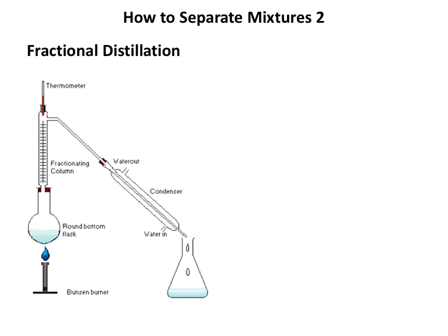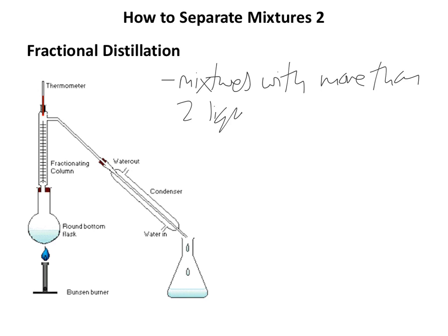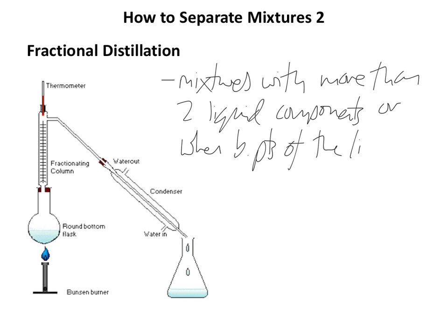It does look a little bit like distillation, unsurprisingly. But there's a key difference. We have a heat source down here, which is the same. We have a condenser here, with the water coming in at the bottom and going out at the top. And we have the distillate dripping off here. The key difference is this piece of kit — a fractionating column. We would use fractional distillation when separating mixtures with more than two liquid components, or when the boiling points of the liquid components are quite close.